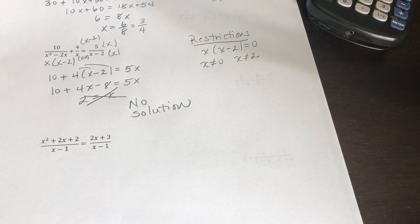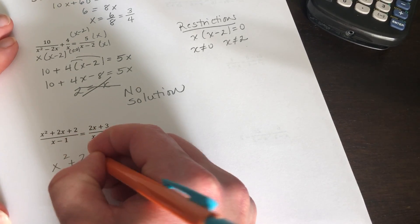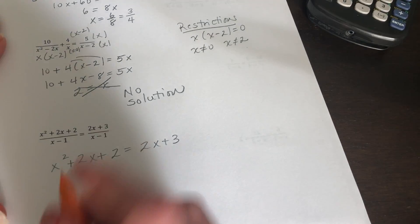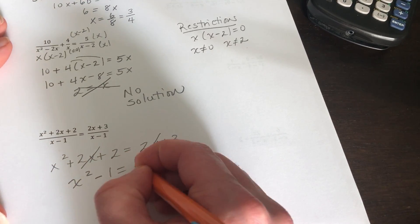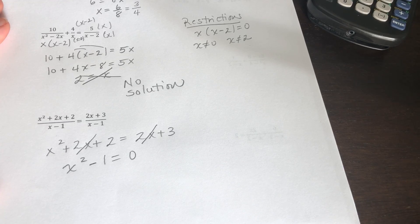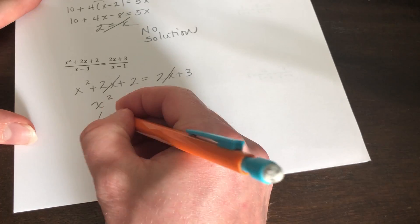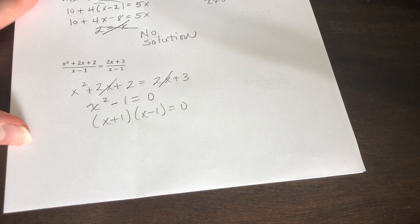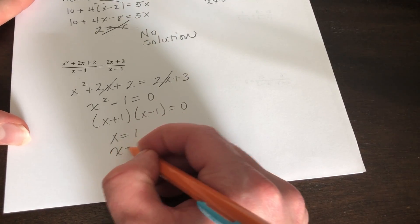The next example has a common denominator on both sides, so we're just dealing with the top: x squared plus 2x plus 2 is equal to 2x plus 3. We have a 2x on both sides, so those cancel. Since we have an x squared term, we have to make sure it's set equal to 0 before we do anything. This factors down to x plus 1 times x minus 1, giving us x equals 1 and x equals negative 1.